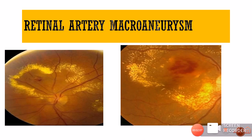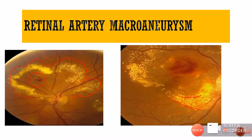Retinal artery macroaneurysms also present with circinate hard exudates. You can see the macroaneurysm, and surrounding it are ringed clusters of hard exudate because the macroaneurysm is leaking and causing exudation. The fluid leaks and later gets resolved by the retina, leaving behind precipitated lipoproteins seen as glistening hard exudates.